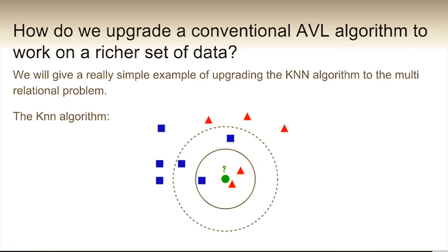So we've got our classes, which are red and blue. And we've got our instance that we want to classify, which is the green circle. And so if we had K as three, then we'd classify that instance as red. And if we had K as five, then we'd classify that instance as blue.